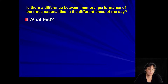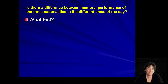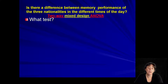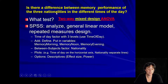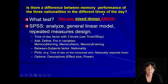Is there a difference between memory performance of the three nationalities at the different times of the day? This should ring a bell because this is what we started with. What kind of ANOVA can you perform here? It's a two-way ANOVA — specifically a mixed design ANOVA, where one factor, the nationalities, is a between-subjects design, but you also have a within-subjects effect being tested: the times of the day.